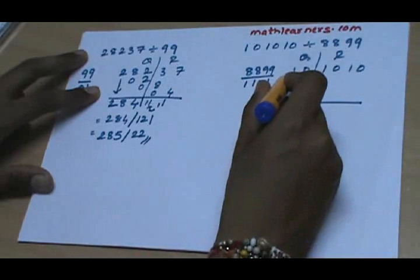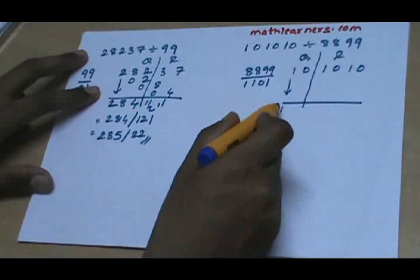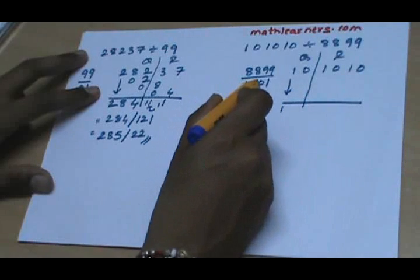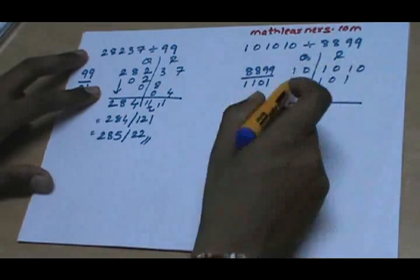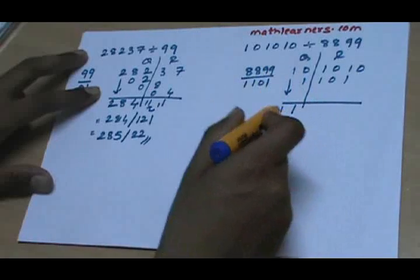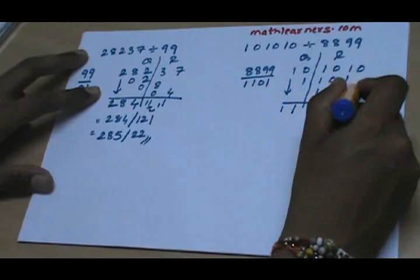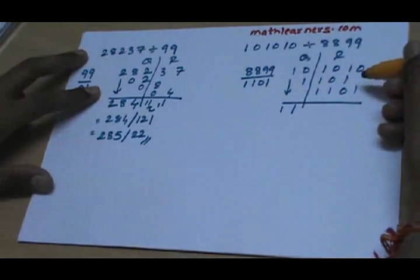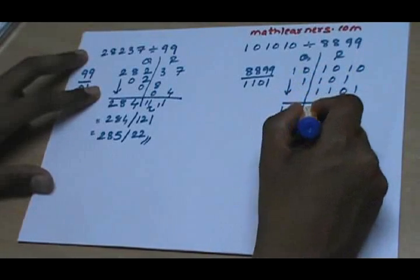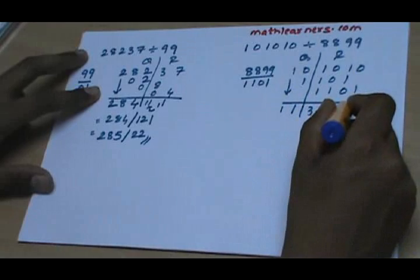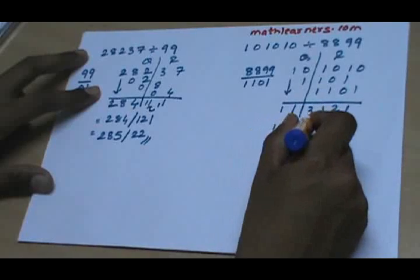The process remains the same. We copy the first digit as it is: 1. This 1 is individually multiplied by 1101, giving 1101. Then 0 + 1 = 1, and this 1 is individually multiplied by 1101. Once the last column is filled we stop, and we do the addition, giving 10 / 3121. So this is your answer.